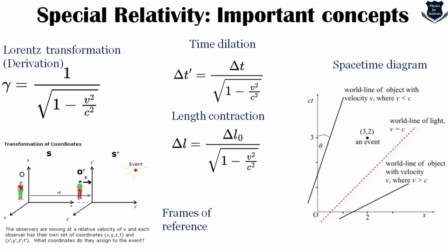Spacetime diagrams are a graphical illustration of the properties of space and time in special relativity. They allow a qualitative understanding of time dilation and length contraction without mathematical equations. The history of an object's location throughout all time traces out a line referred to as the object's world line in a spacetime diagram. Points in spacetime diagrams represent fixed positions in space and time and are referred to as events.